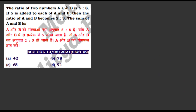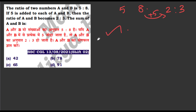The ratio of two numbers A to B is 5 is to 8. When 5 is added to each, the ratio becomes 2 is to 3. Find the sum of A and B. Solve this as homework using the methods discussed.